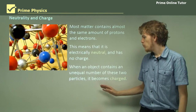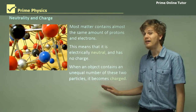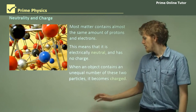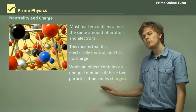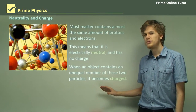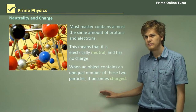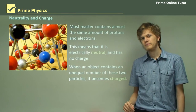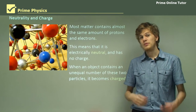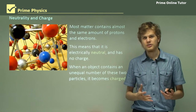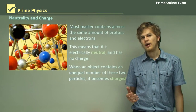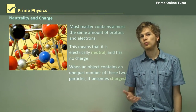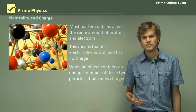But when an object contains unequal numbers of protons and electrons, the object will become charged. And it may be positively charged or negatively charged based on whether we're gaining electrons or losing electrons.